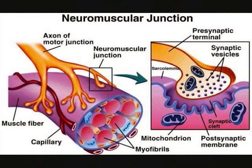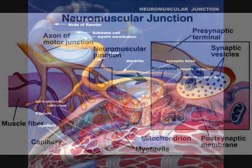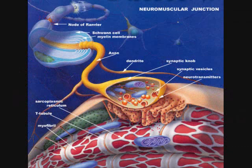The neuromuscular junction is the site where the axon of a neuron and a muscular fiber meet. The synapse is the site of functional connection — the space through which information can pass. Neurons communicate with the cells they control by releasing chemicals called neurotransmitters. Normally, a skeletal muscle fiber contracts only upon stimulation by a motor neuron. The motor end plates are specialized portions of a muscle fiber membrane at a neuromuscular junction, where nuclei and mitochondria are abundant and the sarcolemma is extensively folded.